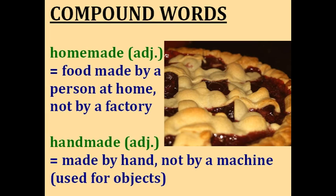How would you like some homemade cherry pie? The adjective homemade means something, usually a food, was made by a person at home and not by a factory or big company. If you buy something in the supermarket that's already prepared, it's not homemade. But if your mother makes it at home, or if you make it directly from the ingredients, then it's homemade. Similar to that is handmade, which describes something made by hand, not by a machine. For example, if you make your own clothing, then your clothes are handmade. We usually use homemade for food and handmade for objects like clothing or decorative objects.